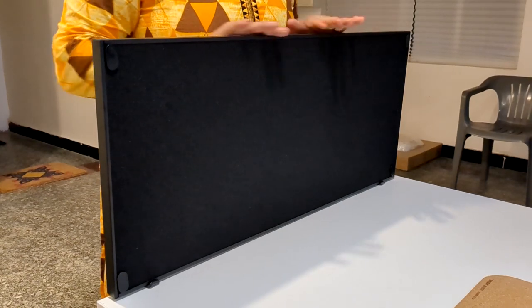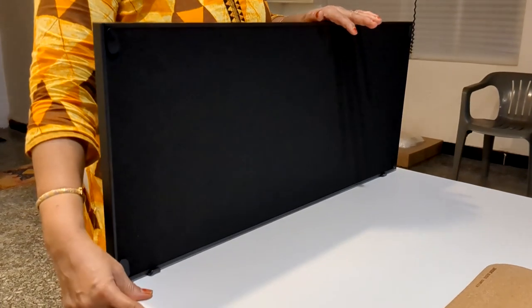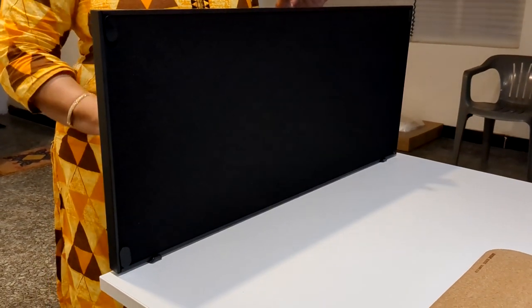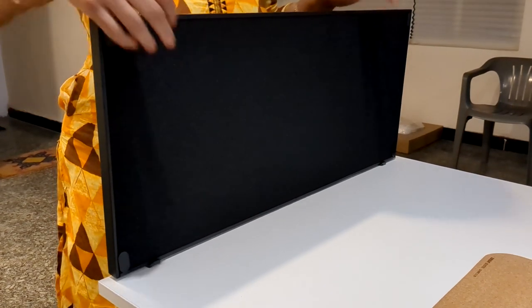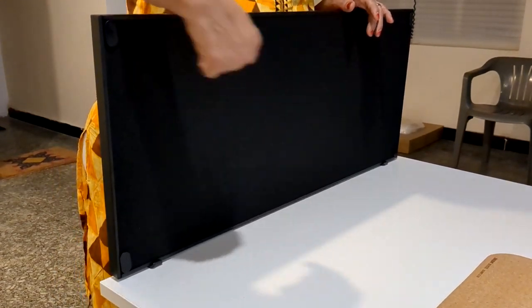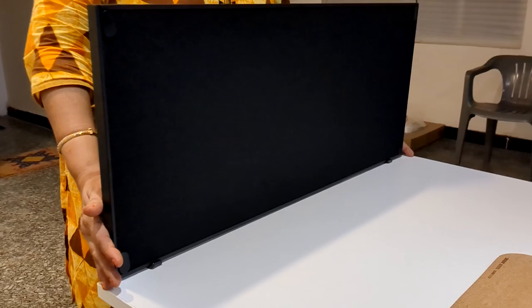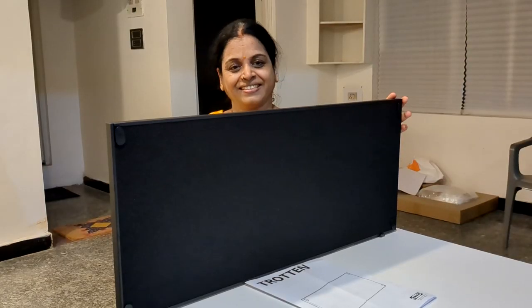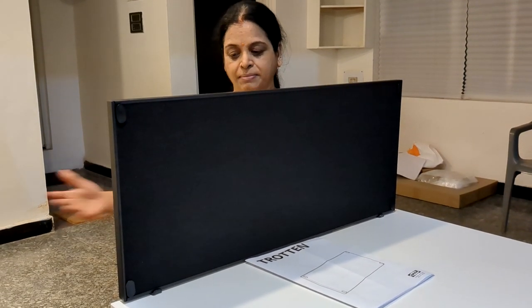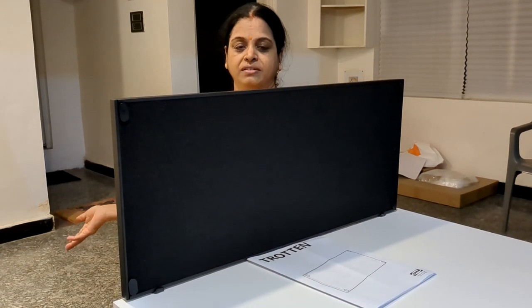So this is the Trotten notice board made for the Trotten desk. We put the black board here and the fabric here where you can use it as a pin board, perfectly fitting on the desk. So since it is fitted like this, if there is one more table and I am sitting next to you, this acts as a partition and it gives you privacy from the next desk.